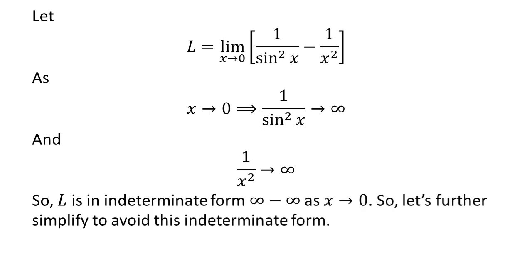As x approaches 0, 1 upon square of sin of x approaches infinity and 1 upon square of x also approaches infinity. So we can see that the limit L is in indeterminate form infinity minus infinity. Let us try to further simplify the limit to avoid this indeterminate form.